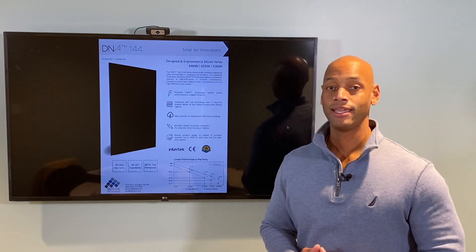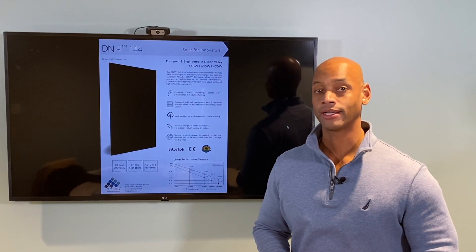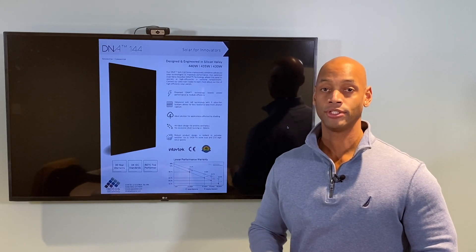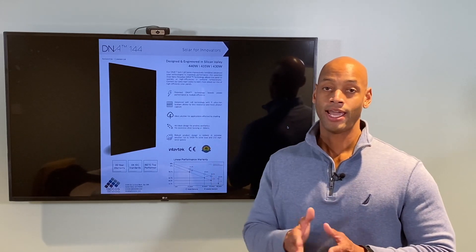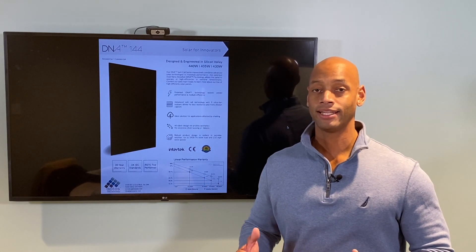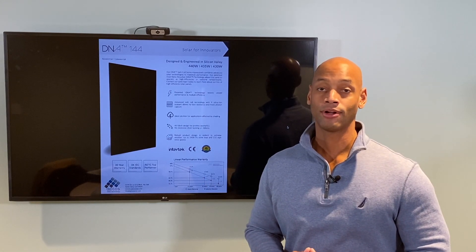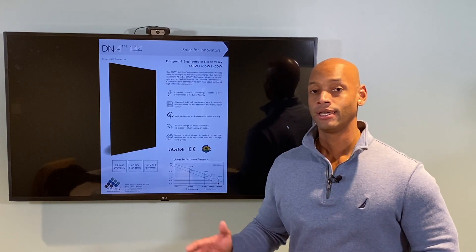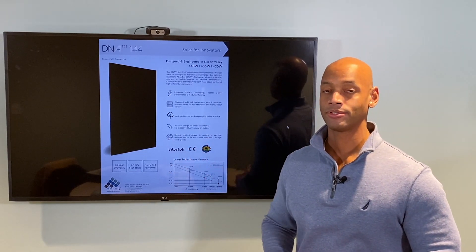This is a 72 cell form factor which means that the module is almost seven feet tall and about 40 inches wide once you connect the mounting brackets. Physically it is a very large panel and they're also heavier than standard panels coming in at about 53 pounds per panel.